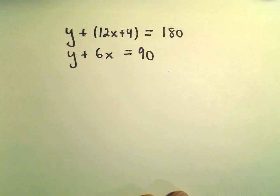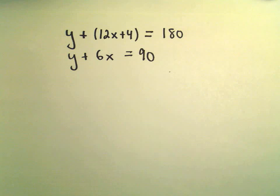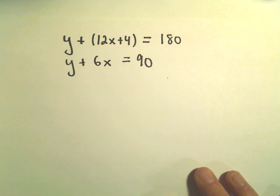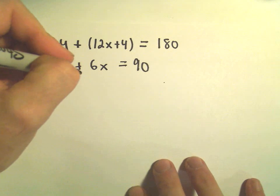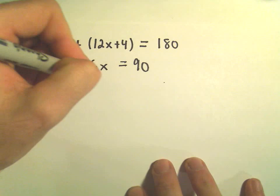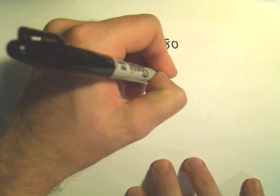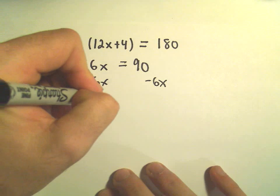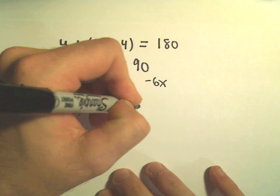So now we've got just basically a little system of linear equations here, and all we have to do is eventually solve for y, but the way I'm going to do this is by doing a substitution. I'm going to take my second equation and simply subtract 6x from both sides.